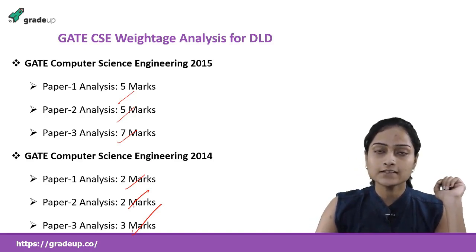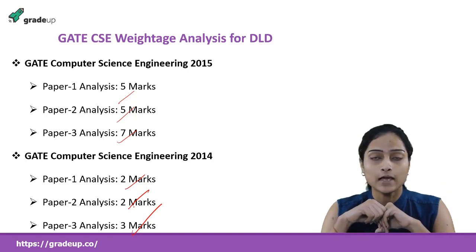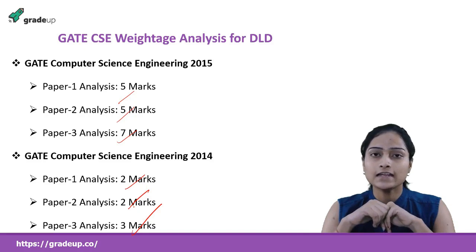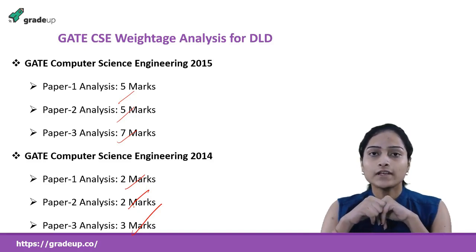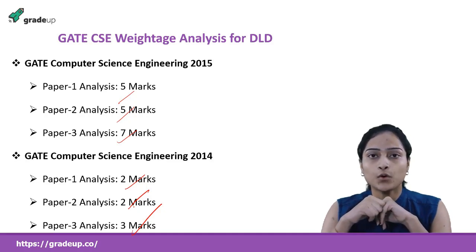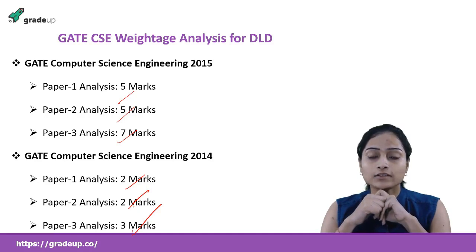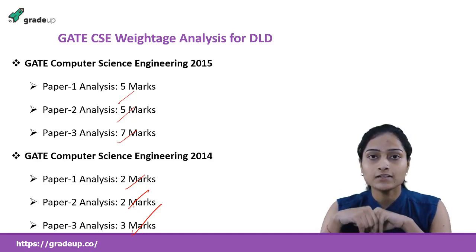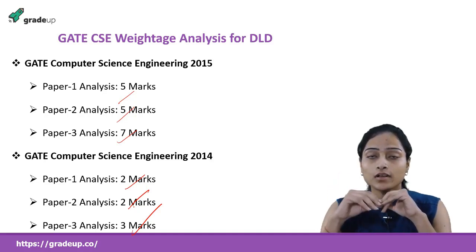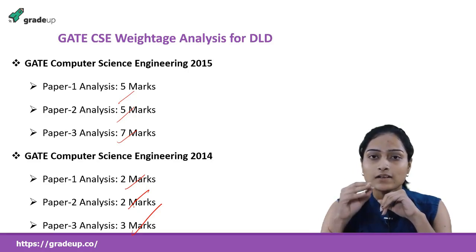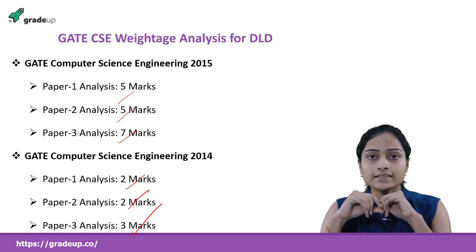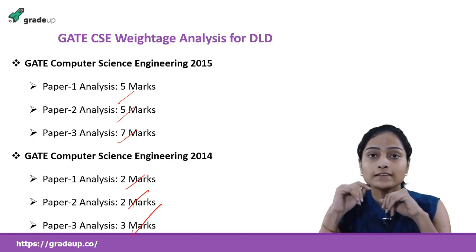I have taken the last 5 years of analysis to check the weightage of DLD in the GATE examination. On average, DLD is asked for around 5 marks every year. These 5 marks can be a game changer. I have seen that people think DLD is not that important and skip it. While it is true the weightage is quite less, the scoring is quite easy. In GATE 2017 it was asked for 10 marks, so you should strategize to score full marks on this subject.